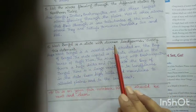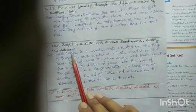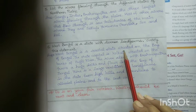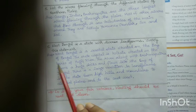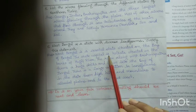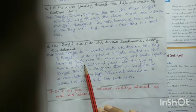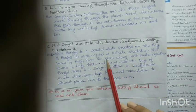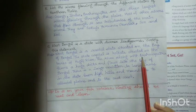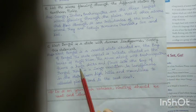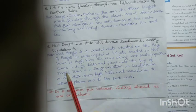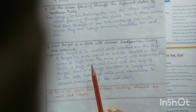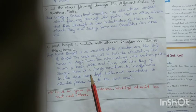West Bengal is a coastal state situated on the Bay of Bengal. The state capital is Kolkata, situated on the banks of the Hooghly River. The river, along with the Brahmaputra, forms a huge delta and flows into the Bay of Bengal.